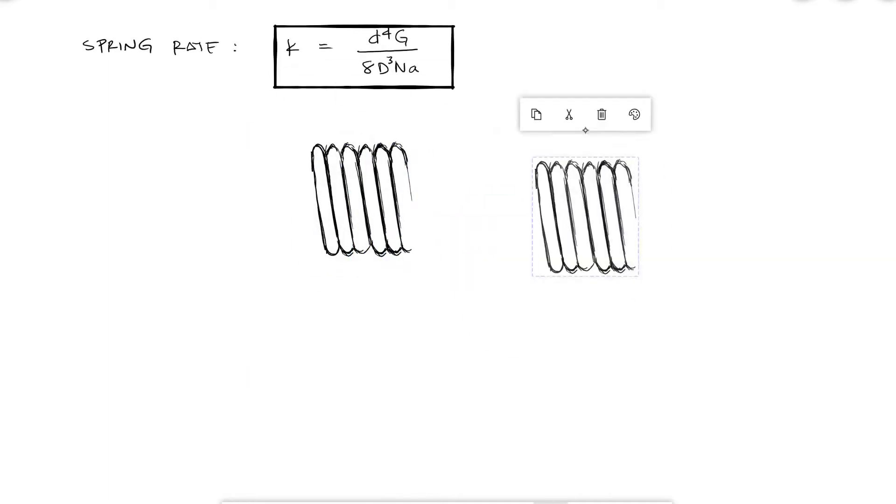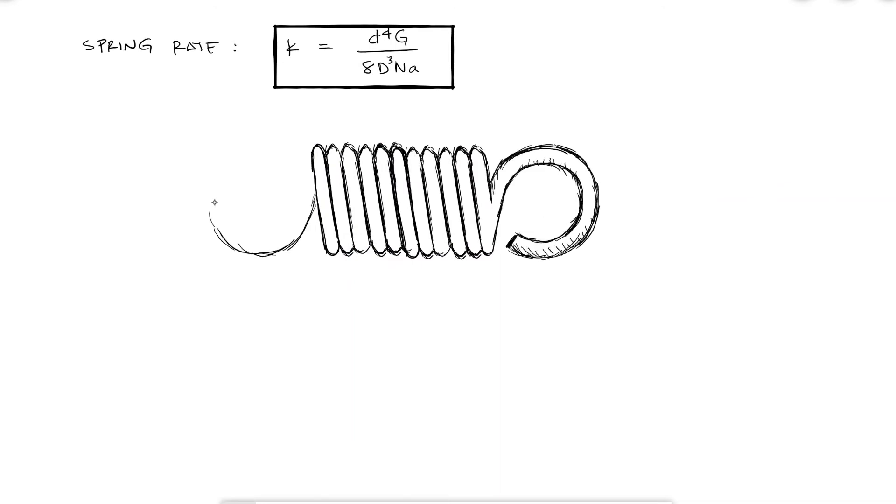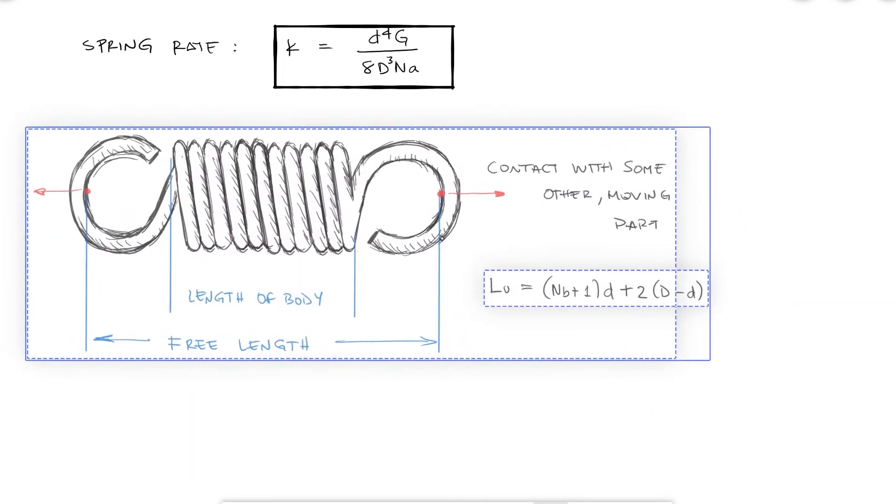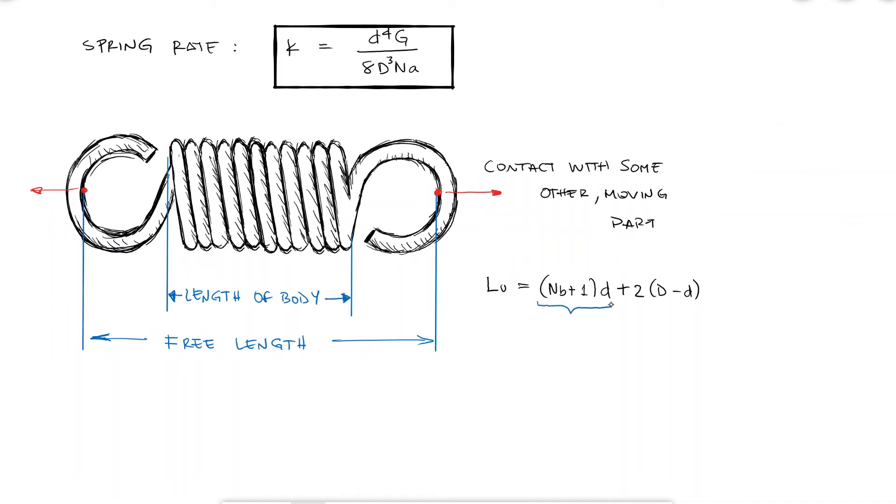The free length would be the length from the inside part of one loop or hook to the other as these are the locations of whatever is causing the load. The part that is stretching the spring would be in contact with the loop at that location. The expression would be the length of the body of the spring plus two loops using the inner diameter again because that is where the spring would make contact with the load. The length of the body as you can see from this expression is the number of body coils plus one times the diameter of the wire just like we usually did for the solid length of compression springs.